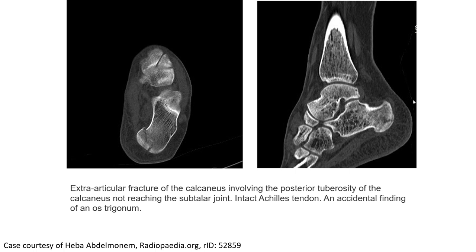This CT is an example of an extra-articular fracture of the calcaneus involving the posterior tuberosity of the calcaneus, not reaching the subtalar joint, with an intact Achilles tendon and an os trigonum as an incidental finding of the calcaneus structure.